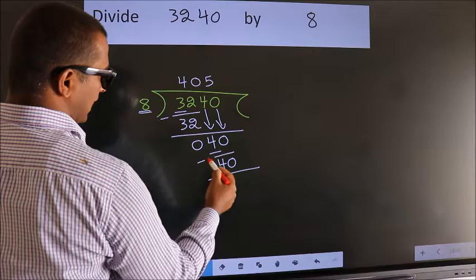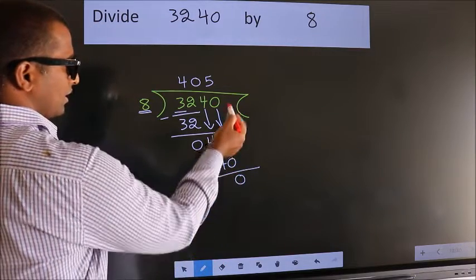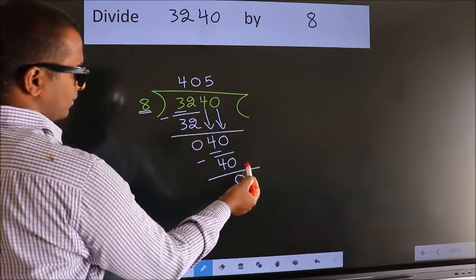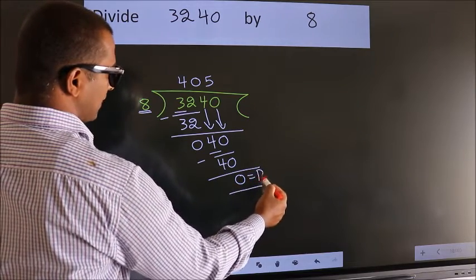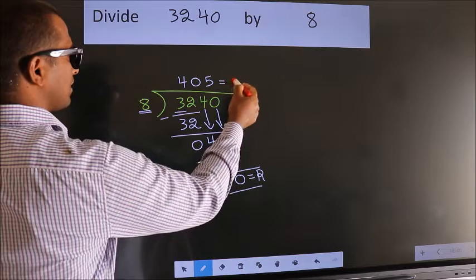Now we subtract, we get 0. No more numbers to bring down, so we stop here. This is our remainder, this is our quotient.